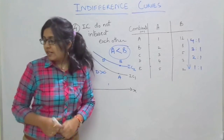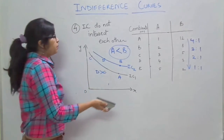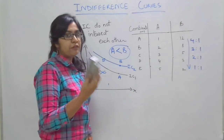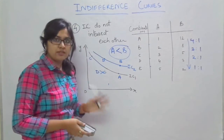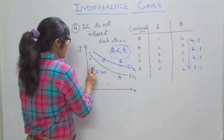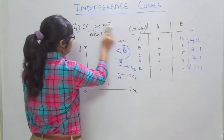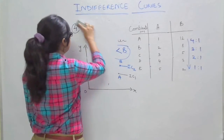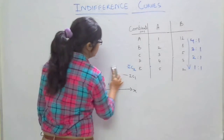So properties 3 and 4 are actually interlinked and you can learn them easily together. Now let's do the final fifth property of indifference curves.